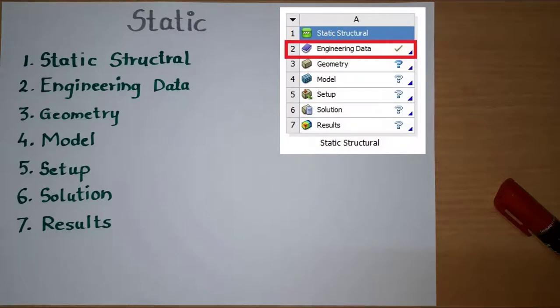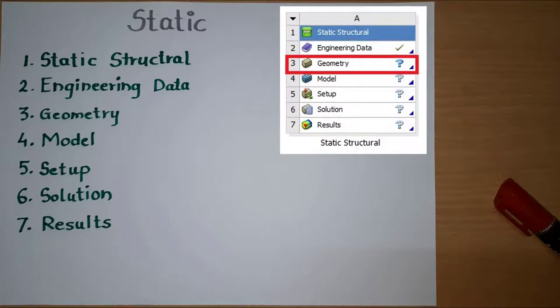If the material is different, then we need to define its material properties. About engineering data, we are going to discuss in the separate video in this series. Once we done with the engineering data, we can move ahead to next step, geometry.